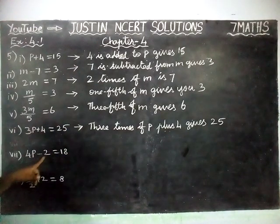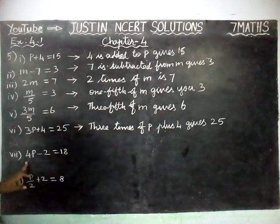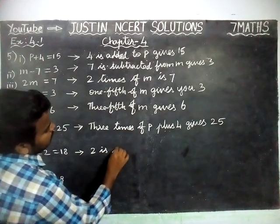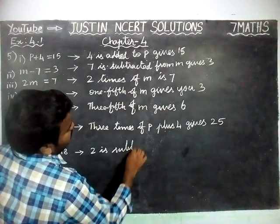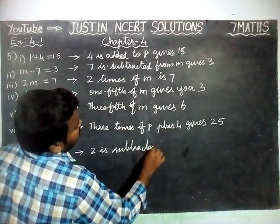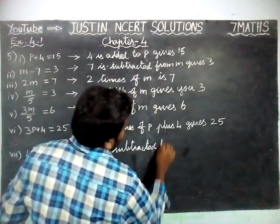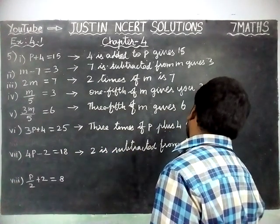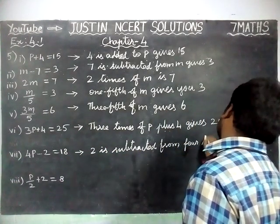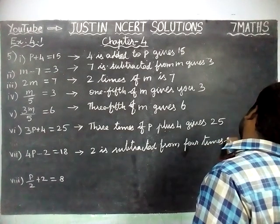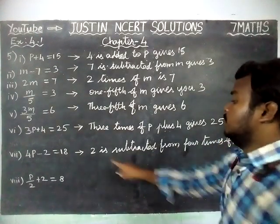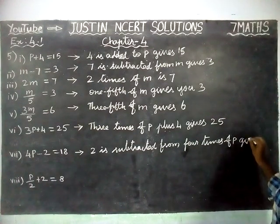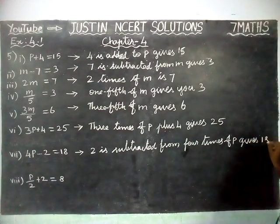Next: 4P minus 2 equal to 18. We can write it as: 2 is subtracted from 4 times of P gives 18.